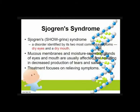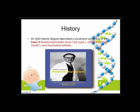Next is Sjogren's syndrome. This is a disorder identified by its two most common symptoms: dry eyes and dry mouth. Mucous membranes and moisture-secreting glands of the eyes and mouth are usually affected first, resulting in decreased production of tears and saliva. The pathognomonic or hallmark signs for Sjogren's syndrome are dry eyes and dry mouth; treatment focuses on relieving symptoms of dryness.